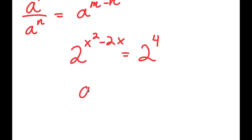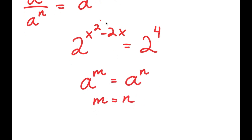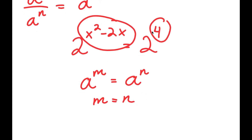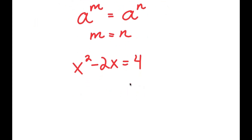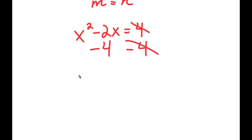Now if I have something in the form a to the power of m is equal to a to the power of n, this means that m is equal to n. So in this case, m is x squared minus 2x and n is 4, so I get x squared minus 2x is equal to 4. And now if I subtract 4 on both sides, these two cancel out and I get x squared minus 2x minus 4 is equal to 0.